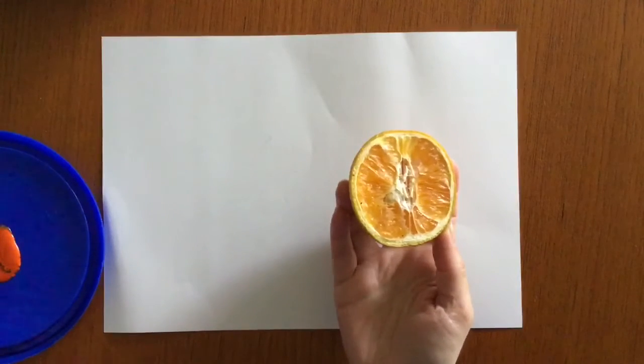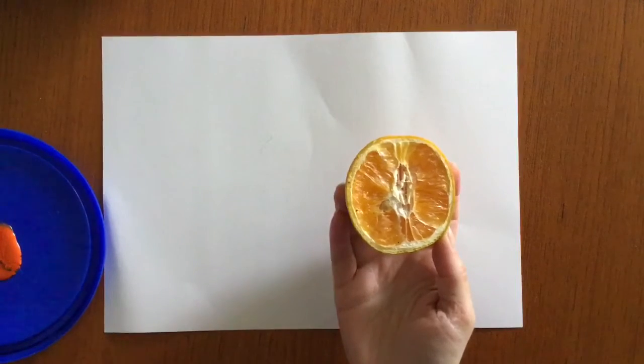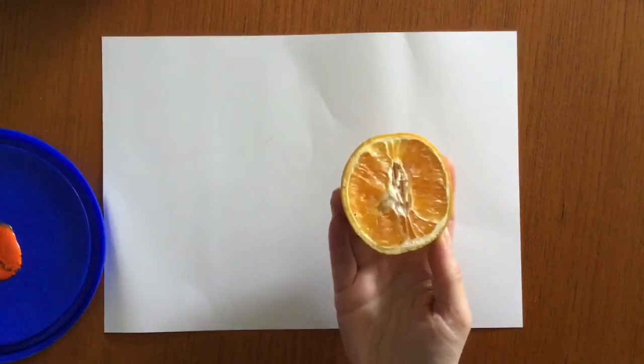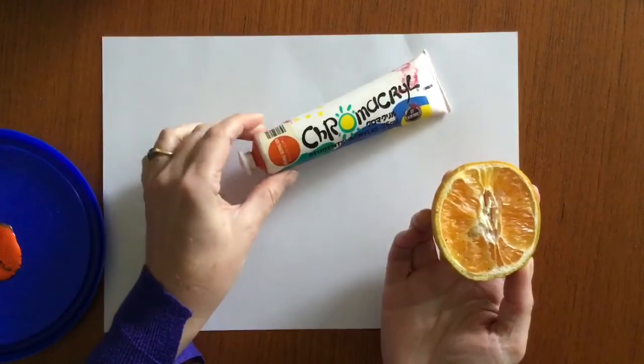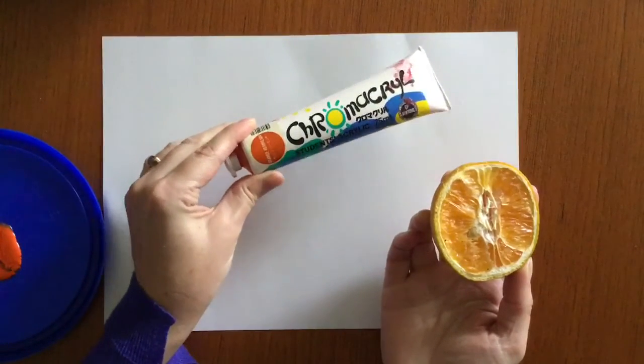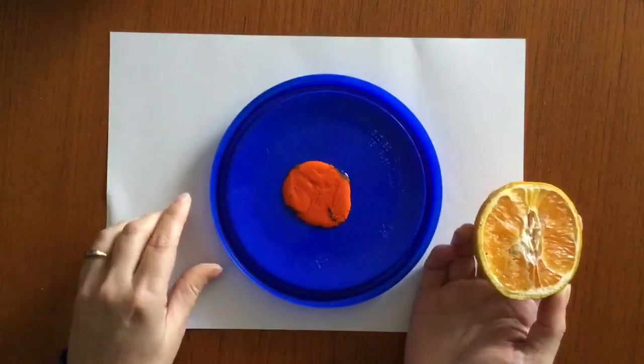You don't have to use orange. You can use potato and cut out a shape or any other type of food that you can cut in half and I'm using student acrylic paint that I've got from home.